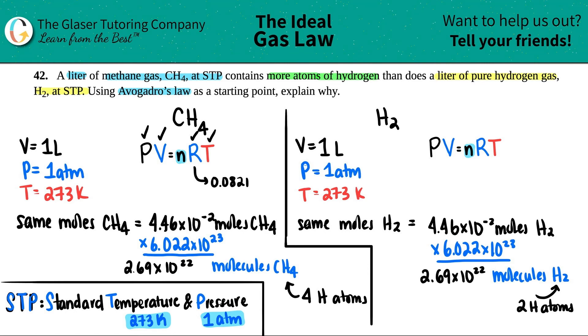So that's the difference. Now we're taking this value and timesing it by four. As opposed to with H2, we're only timesing it by two. And that makes all the difference. So that's why at STP, CH4 has more atoms of hydrogen than hydrogen gas, because it just literally comes down to there's four atoms in CH4, as opposed to two atoms of H2. But just keep in mind that the molecules are the same. So that's Avogadro's law. And then you just take it from there.